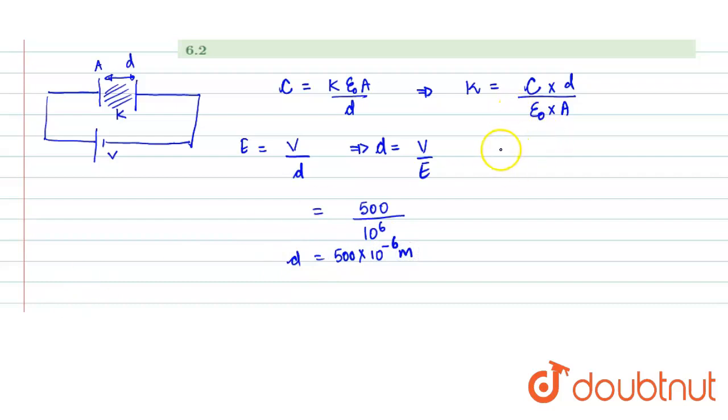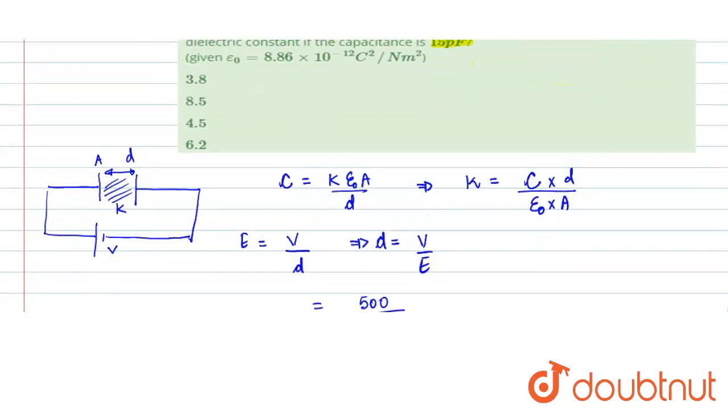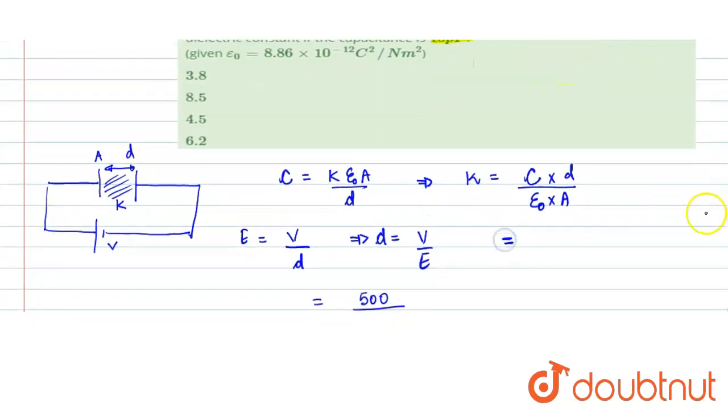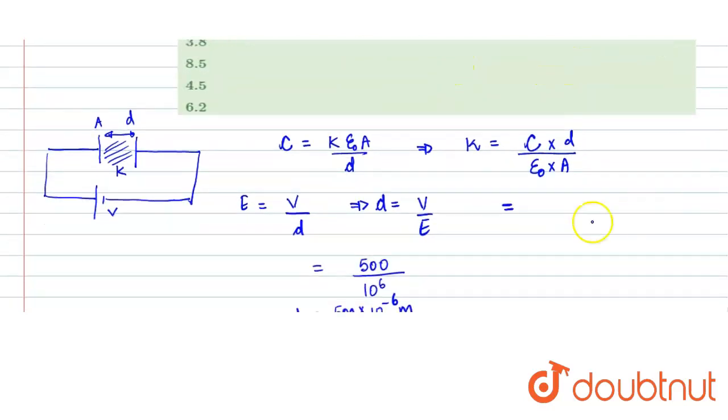Now we can put the values. Cross section area is given to us as 10^-4 meter square. Capacitance C is 15 picofarad, so that means 15 × 10^-12 farad into D, and D value is 500 × 10^-6.